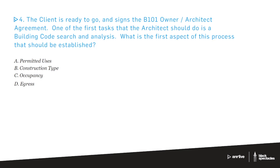The answer choices are: permitted uses, construction type, occupancy, and egress. Right off the bat, we can cancel out permitted uses because that's not the building code — that's the zoning code. Permitted uses are part of the zoning process.